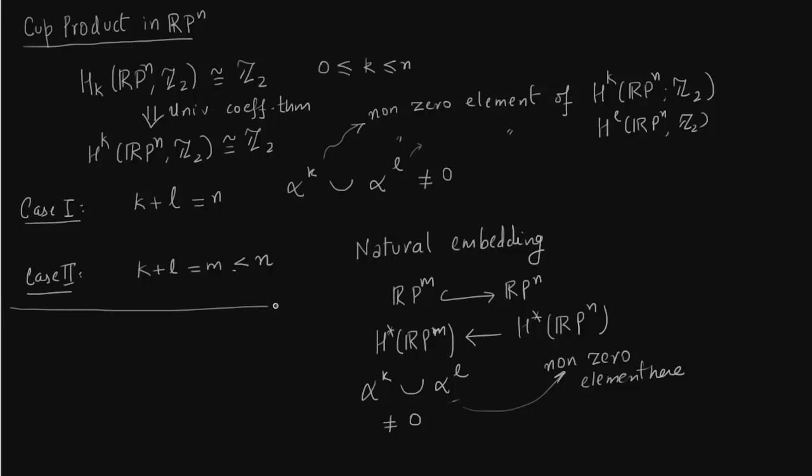So now we can collect the results. We have alpha k cup alpha L equals alpha k plus L if k plus L is less than or equal to N.